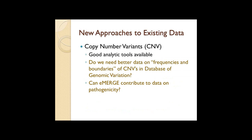Halken emphasized new approaches to existing data, including copy number variants and good analytic tools available. Do we need better data on frequencies and boundaries of CNVs in the database of genomic variation? Can eMERGE contribute to data on pathogenicity? Is the eMERGE network uniquely placed to fill a significant gap in our understanding of CNVs?